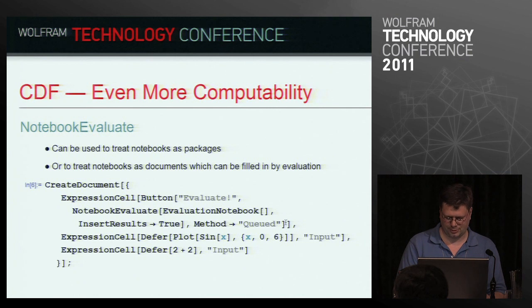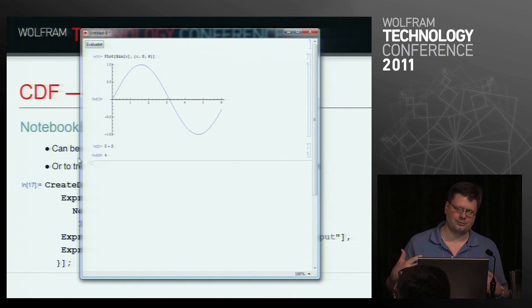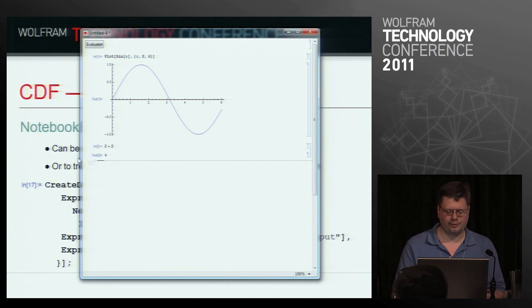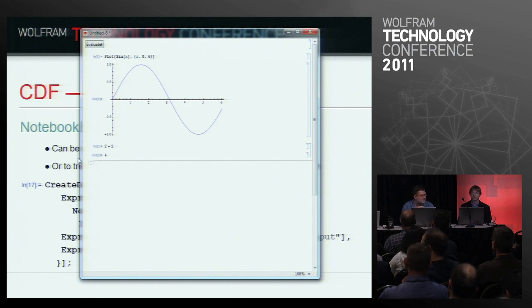NotebookEvaluate is a very interesting function with more value to it than you might think at first. In a quick demo, I have a button with NotebookEvaluate that does the simple thing of just running through and evaluating an entire notebook. Notebooks are being programmatically manipulated, and NotebookEvaluate allows us to do some fairly interesting things. There's an effort in Tom's group working on report generation built on top of NotebookEvaluate — the ability to go in and actually hit all the pieces in a particular notebook and get the output you're looking at.